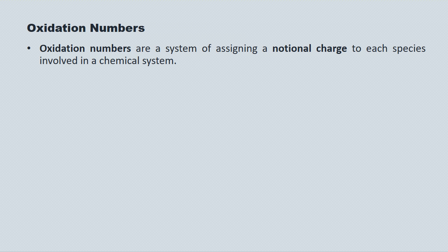Oxidation numbers are a system of assigning a notional charge to each species involved in a chemical reaction. They don't represent an actual charge. They're really just an accounting system that allows us to manipulate electrochemical equations in many different practical ways.